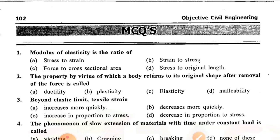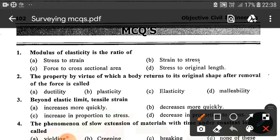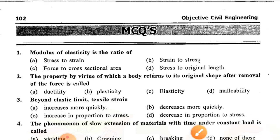Hello friends, today we will be discussing objective questions on Strength of Materials. Question number one: Modulus of elasticity is the ratio of — option A is correct — stress to strain. Question number two: The property by virtue of which a body returns to its original shape after removal of the force is called — option C is correct — elasticity.